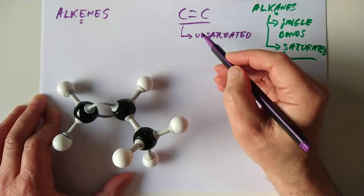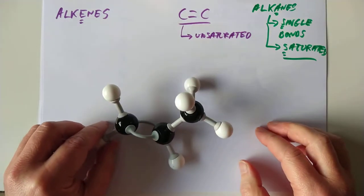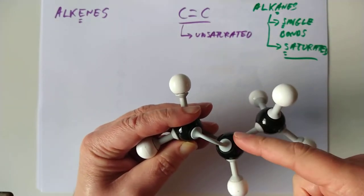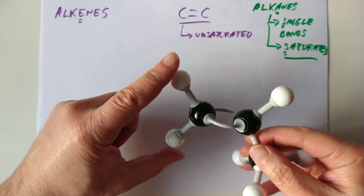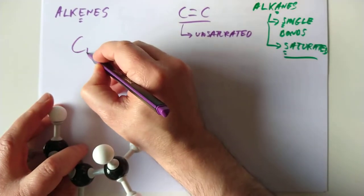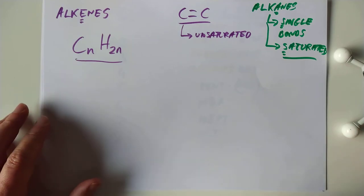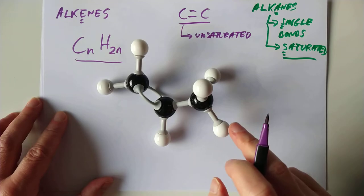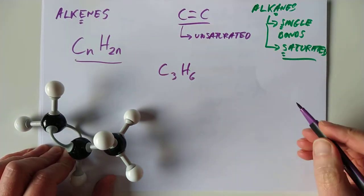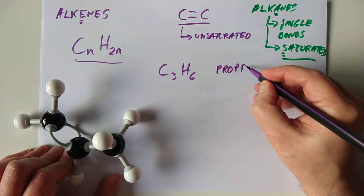S for single bonds, S for saturated; double bonds means unsaturated — you might have heard of unsaturated and saturated fats. If this were an alkane, we'd have had an extra H here and three Hs on the end; we've only got two Hs and one H, so we've effectively lost two Hs from our alkane. That is why the general formula is now CₙH₂ₙ — no more 'plus two' because we're down two Hs. This example has three carbons: it's called prop, and it's propene.